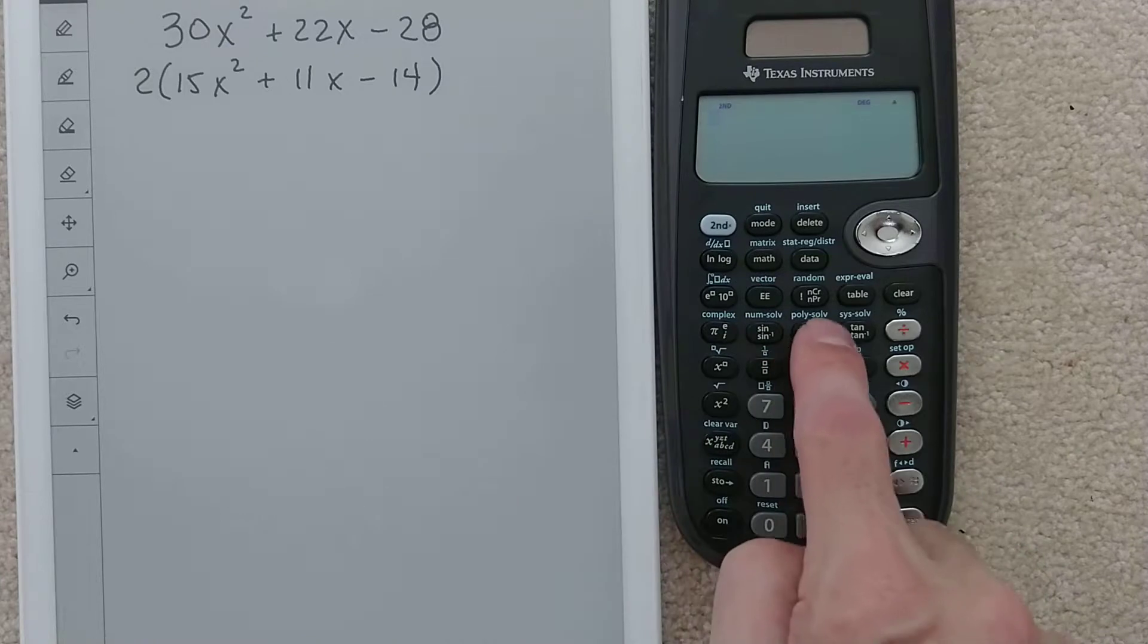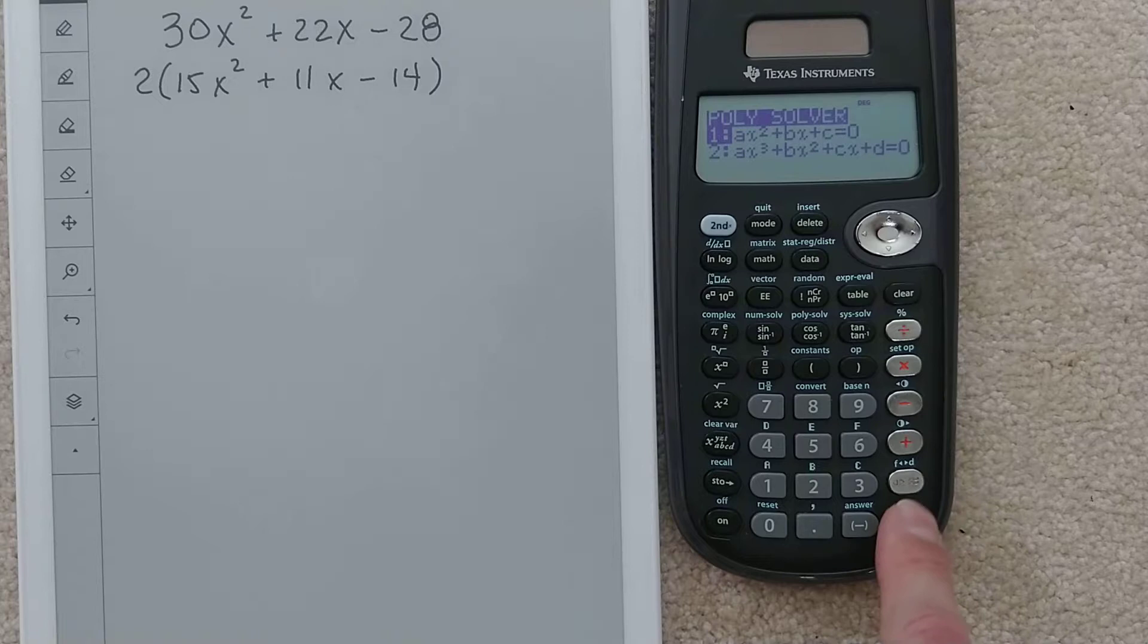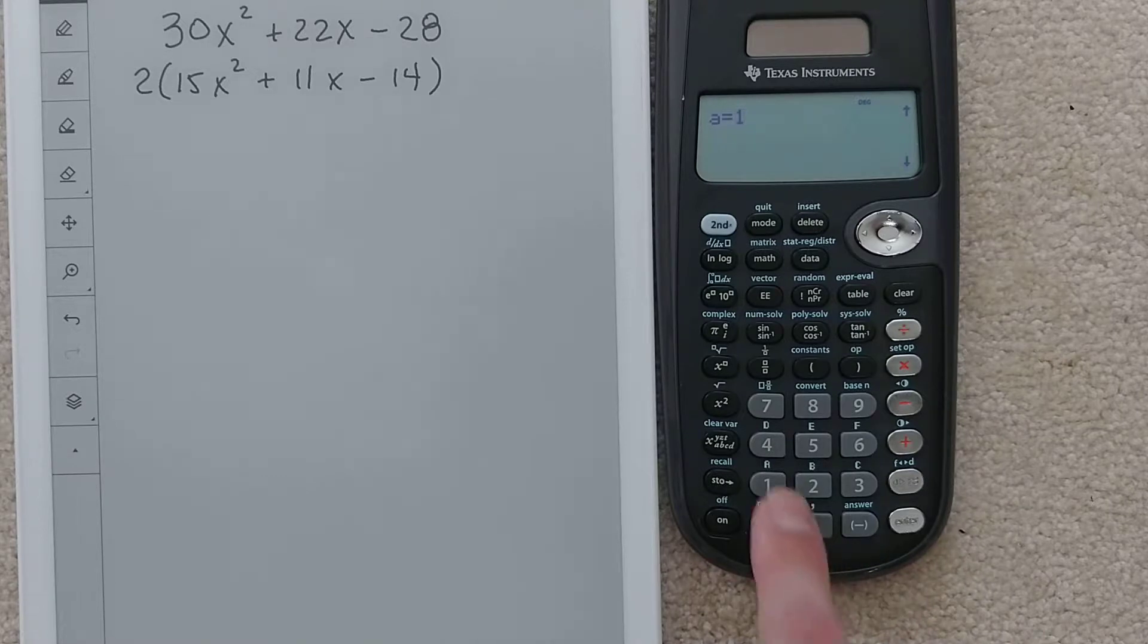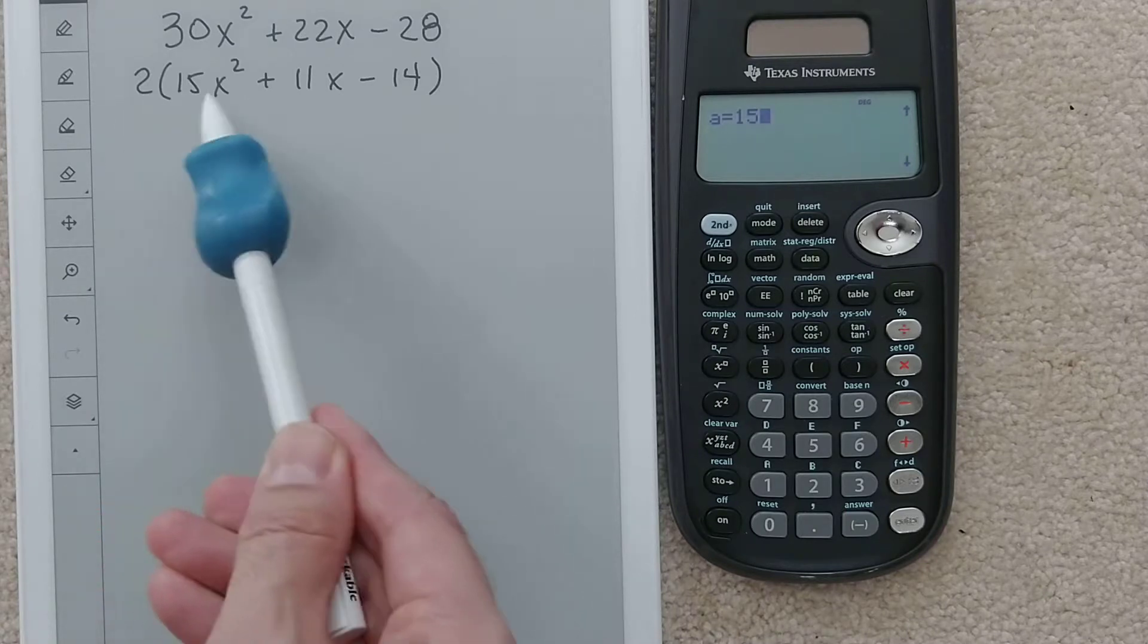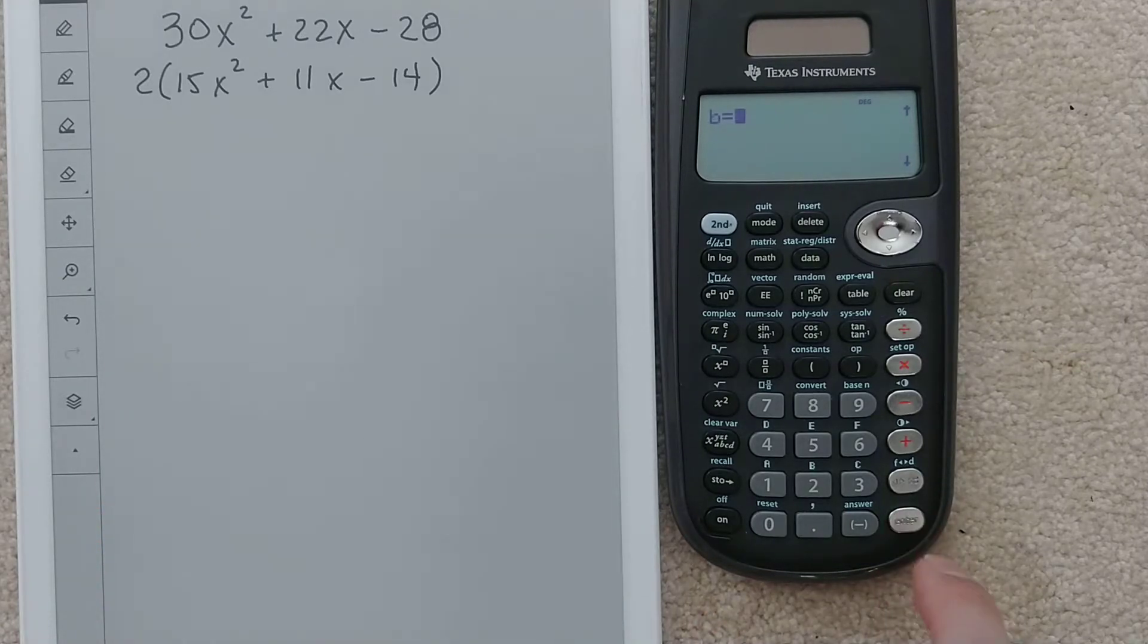Now that's all we can factor out, we're going to use the calculator. We're going to go into this poly solve mode, so hit second and then poly solve, which is above the cosine key. Go into that quadratic mode, and our a value is 15.